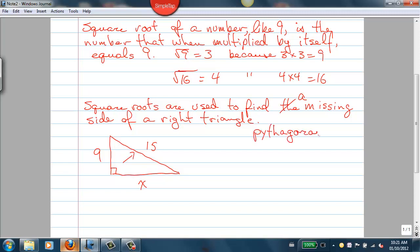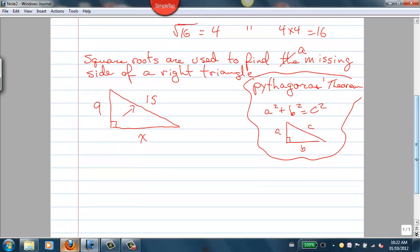We can use Pythagoras' theorem, which states that a squared plus b squared is equal to c squared, where a and b are the two short sides, or the legs of the triangle, and c is the hypotenuse.